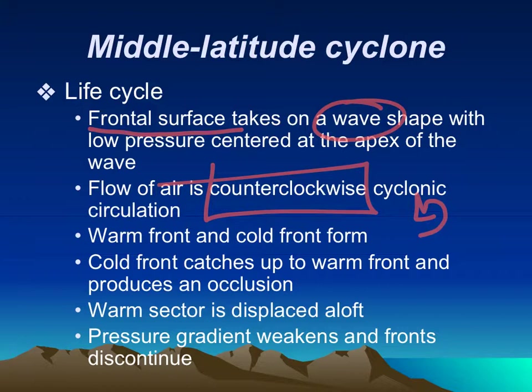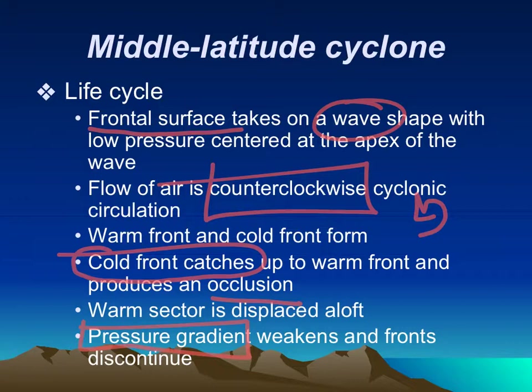It's going to form that cyclonic circulation because the cold air is going to catch up to the warm air. The cold air is heavier, but it's also going to be moving much faster, usually resulting in that occluded front, which we already learned about. What will eventually happen is this pressure gradient — the high to the low — will weaken. You'll get equilibrium, and the storm or the fronts will usually just diminish.